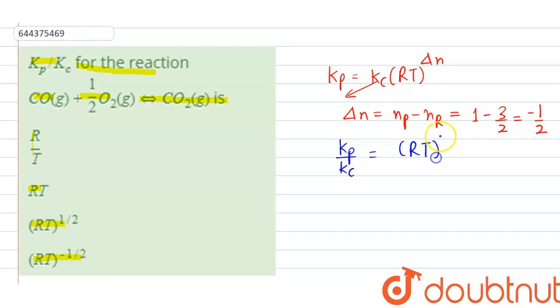Put the value of minus half in delta n. Hence the correct option is the fourth option. Thank you.